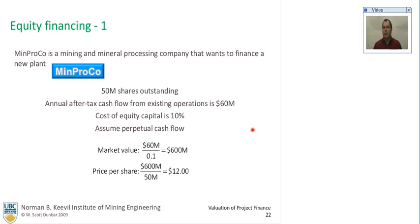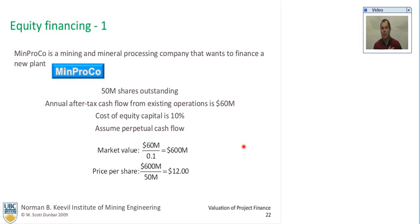Let's look at how equity financing might work using a company called MinProCo — a mining and mineral processing company that wants to finance a new plant. It has 50 million shares outstanding. The annual after-tax cash flow from existing operations is $60 million. The cost of equity capital is 10%, and we assume a perpetual cash flow, like an ongoing operation. The market value is $60 million divided by 0.1, which is $600 million, and the price per share is $12.